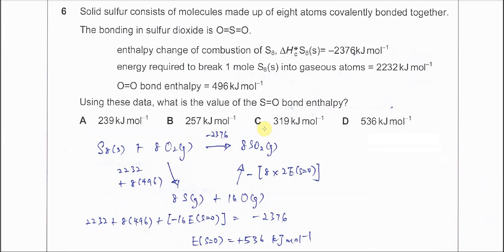Question 6. Solid sulfur consists of molecules made up of eight atoms covalently bonded together.